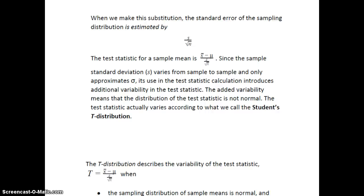So, since we normally don't know the population standard deviation σ, we have to use the sample standard deviation s instead. Therefore, the standard error of the sampling distribution, that means the standard error for the x-bars, is s over the square root of n.